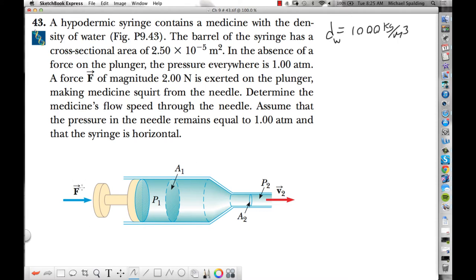Okay, so this force gets applied to this plunger. We're told that the force is 2 newtons. We're given the area of region 1, which is 2.5 times 10 to the negative 5 meter squared.